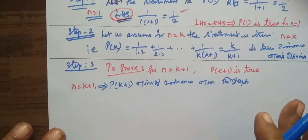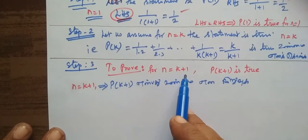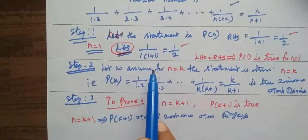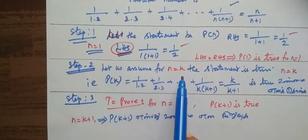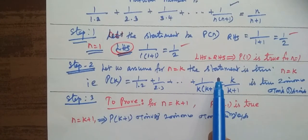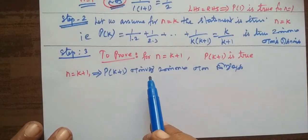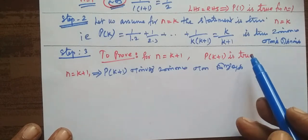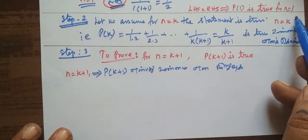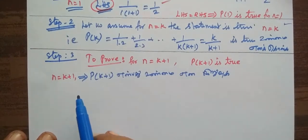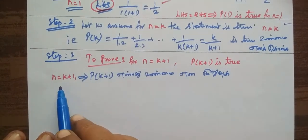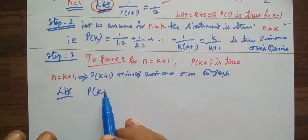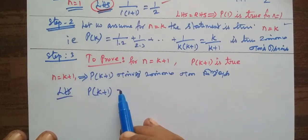This is the third step: to prove n equal to k plus 1. First, n equal to 1, then assume n equal to k, then prove n equal to k plus 1 is true. From step 1 and step 2, every statement will follow. Let the statement be P(k+1) equal to k plus 1.